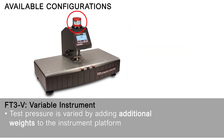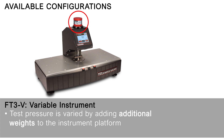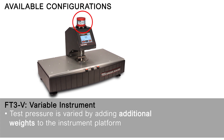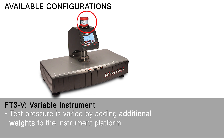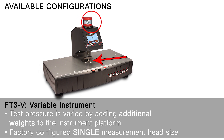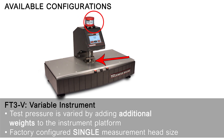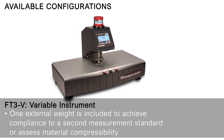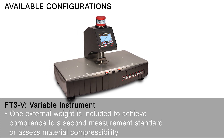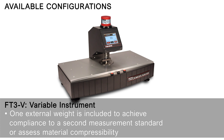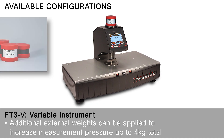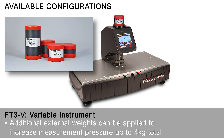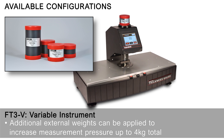FT3 Variable instrument: test pressure is varied by adding additional weights to the instrument platform, factory configured with a single measurement head size. One external weight is included to achieve compliance to a second measurement standard or assess material compressibility.